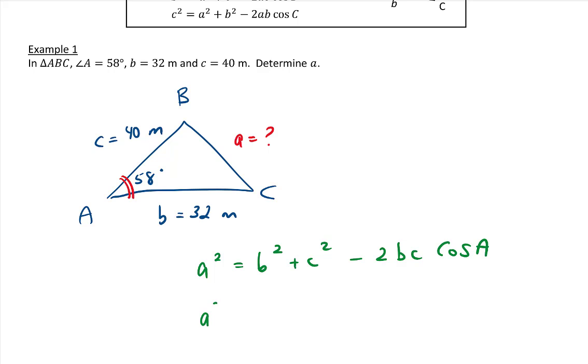So let's substitute in our variables. We don't know a². That's what we're solving for. However, we know that b is 32, c is 40. And again, b is 32, c is 40, and cosine of A, and A is 58 degrees.